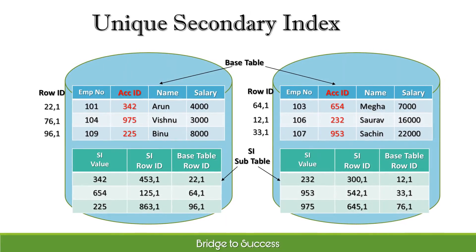Let's see the steps involved to load the USI subtable. Here the secondary index is on column account ID. Teradata will first create the subtable on all AMPs. After that, it hashes the value of the unique SI column, account ID, and based on that hashed value, it checks the hash map for the AMP number which will hold this unique SI value in its subtable. After getting the respective AMP number, the SI value along with two more attributes — secondary index row ID and base table row ID — will be stored in the subtable of that AMP. In this way, we populate our unique SI subtable on each AMP. As the SI column is unique, there is no duplication of SI values in any subtable, meaning each row in the subtable is unique and will fetch only one row when we make a query on that SI column.